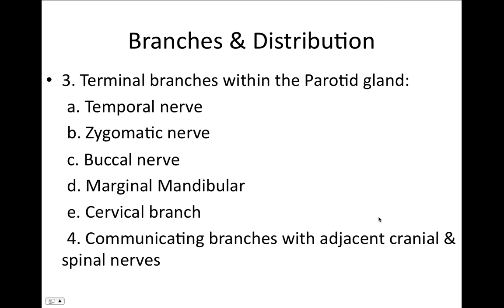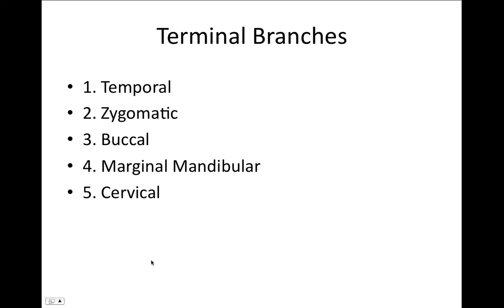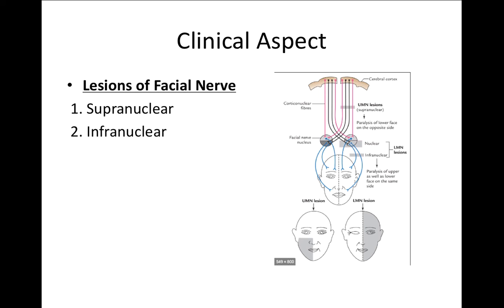To recap, the terminal branches within the parotid gland are: temporal, zygomatic, buccal, marginal mandibular, and cervical. There are also communicating branches with adjacent cranial and spinal nerves.